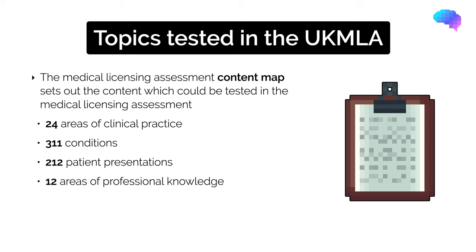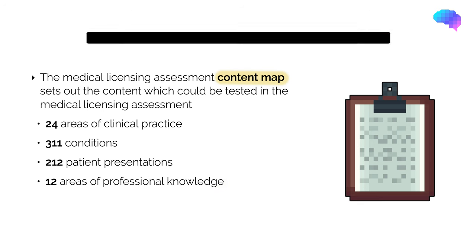The General Medical Council has produced the UK MLA content map, a really important document which sets out the content that could be tested in the Medical Licensing Assessment, and it's available on the GMC website. The content map is divided into 24 areas of clinical practice, 311 conditions, 212 patient presentations, and 12 areas of professional knowledge.